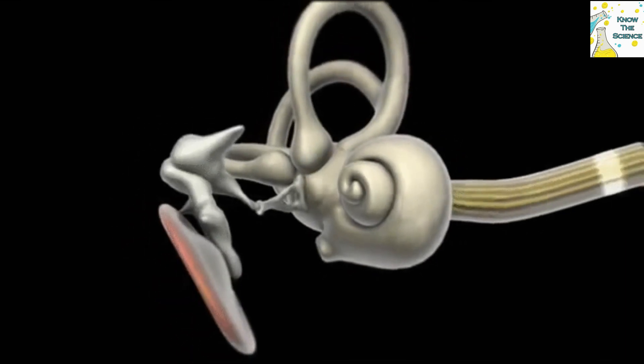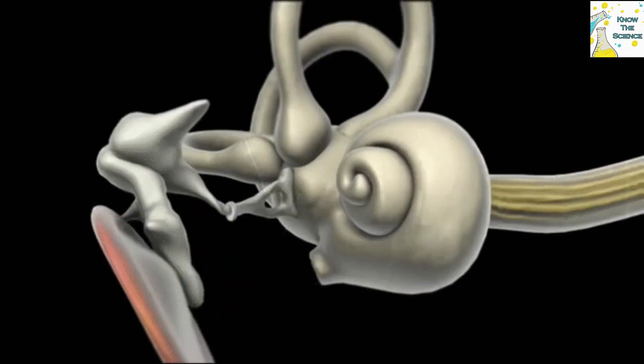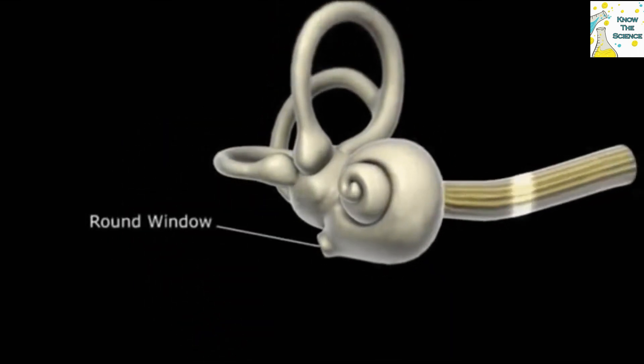Ear ossicles is a collective name for all the three tiny middle ear bones that helps in the transfer of sound pressure from the air-filled chamber of the ear to the fluid-filled chamber. Stapes is one of the three middle ear bones which is smallest in size.